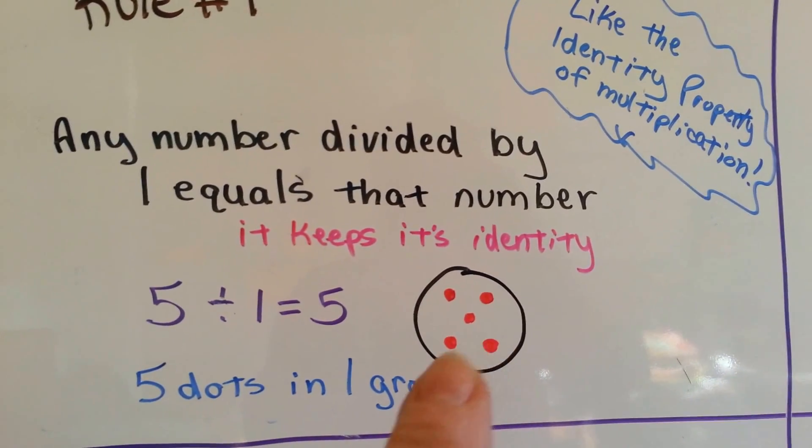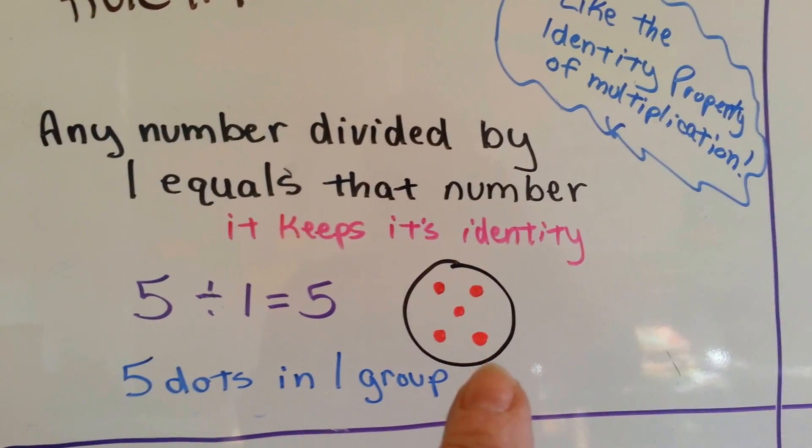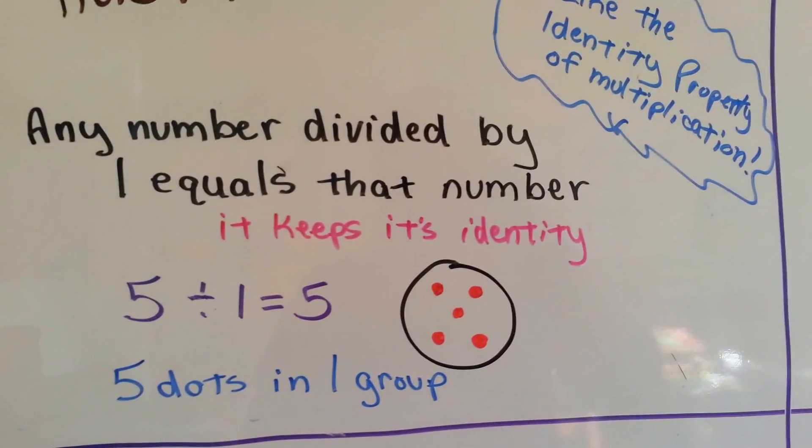5 dots divided into 1 group is still 5. See that?